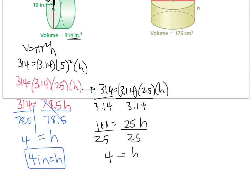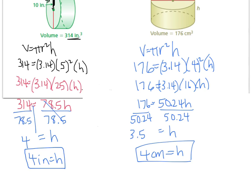I'd like you to pause the video and try example B on your own. They asked us to round to the nearest whole number, so I had to round to 4 even though it was close to 3.5 — I have to follow the directions. Whether you chose to do your inverses earlier or all at once is fine — it's your preference.